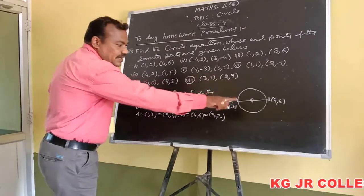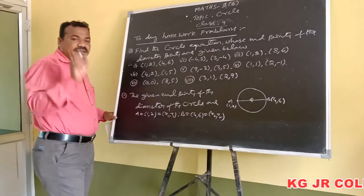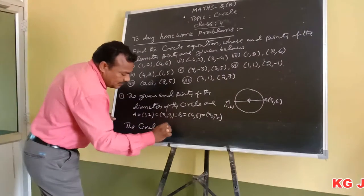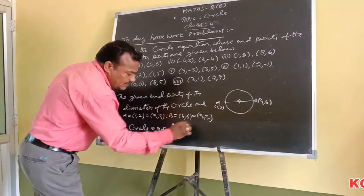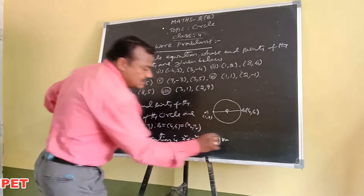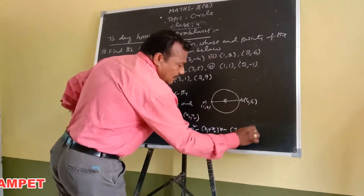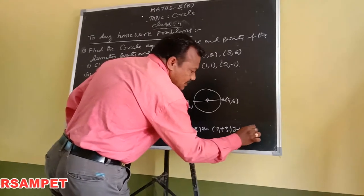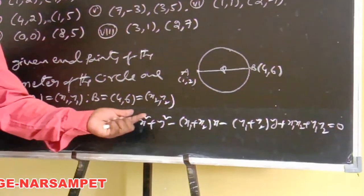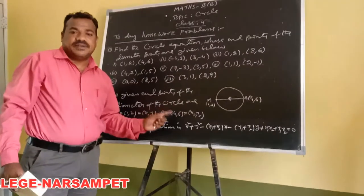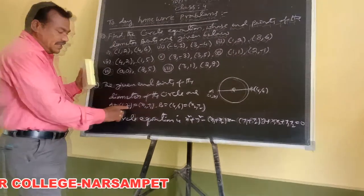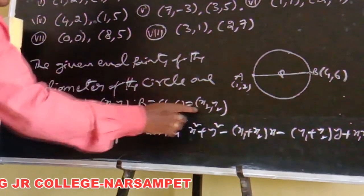Then, to find the circle equation: whenever we know the endpoints of the diameter of the circle, the circle equation is x² + y² − (x1 + x2)x − (y1 + y2)y + x1·x2 + y1·y2 = 0. This is the suitable equation. Putting all these values: x1 = 1, y1 = 2, x2 = 4, y2 = 6.